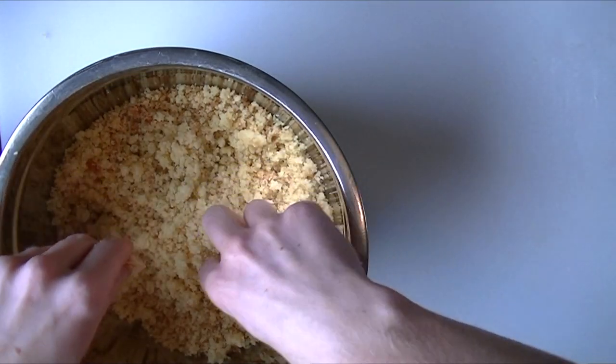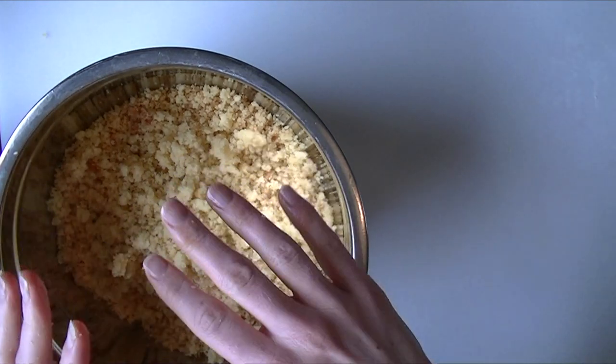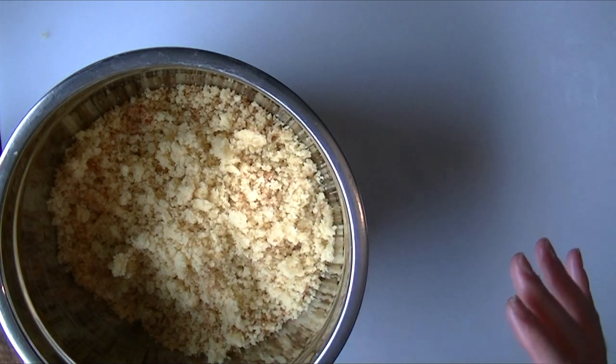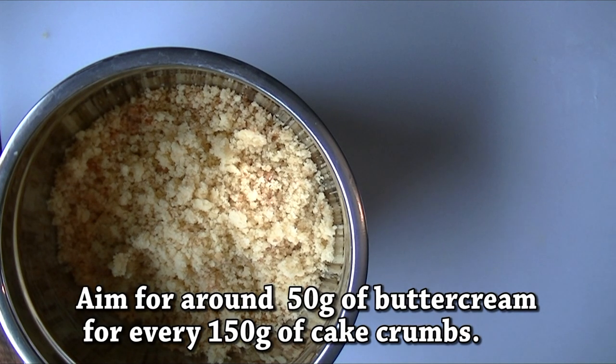So we've just crumbled up the cake crumbs and we're just going to add some buttercream to that. Now quantity wise I tend to guess. I just put it in until I'm happy with the texture and consistency, but you don't want to put too much in that it becomes too sickly that people won't want to eat it.